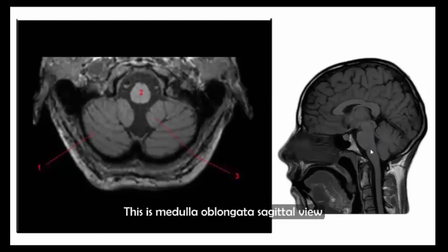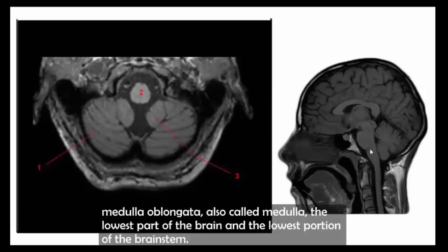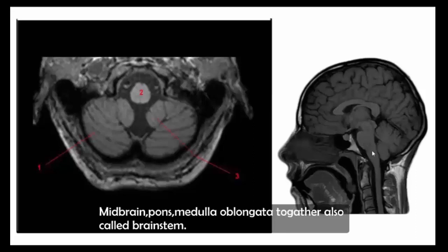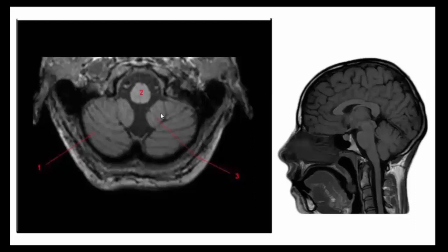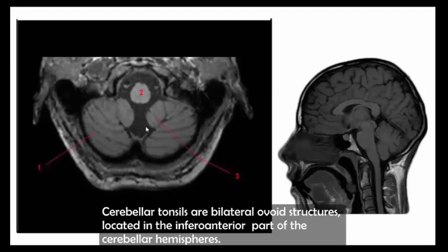This is the medulla oblongata on sagittal view. The medulla oblongata, also called the medulla, is the lowest part of the brain stem. The midbrain, pons, and medulla oblongata together are also called the brainstem.